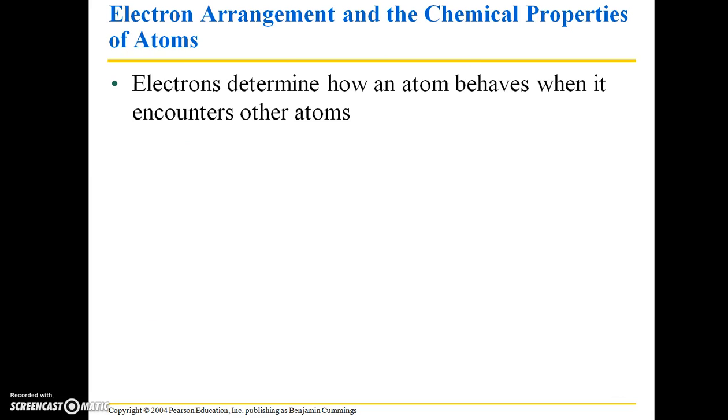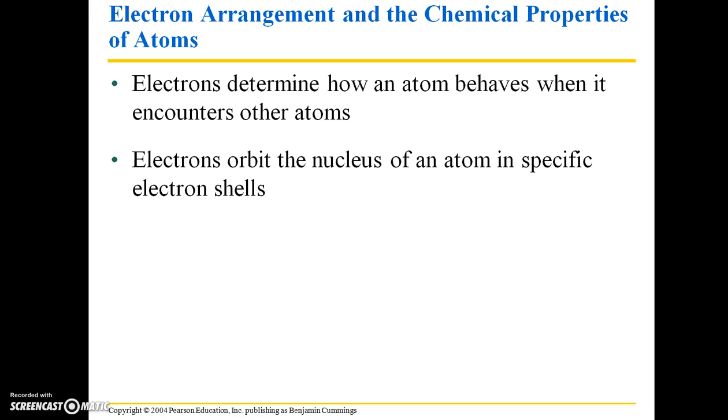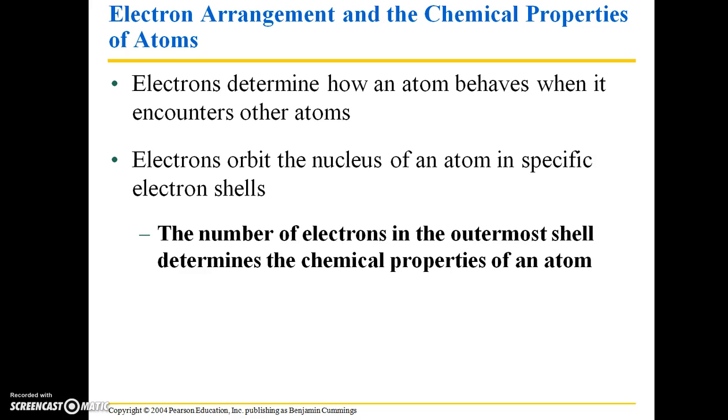Moving on to electron arrangement and the chemical properties of atoms. Electrons are really important subatomic particles because they determine how an atom behaves when it encounters other atoms. Electrons orbit the nucleus of an atom in specific electron shells. If you've taken a high school or college level chemistry class, you're probably familiar with those electron shells and how important it is to determine the number of electrons in an atom. The number of electrons in the outermost shell are what really determines the chemical properties of that atom.